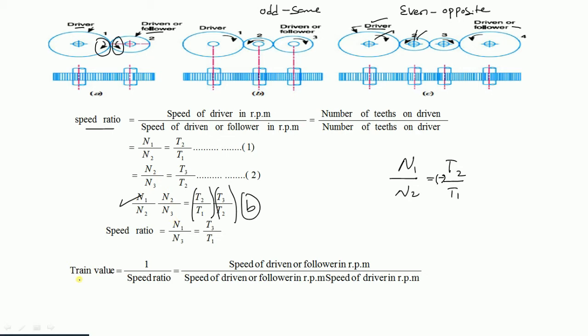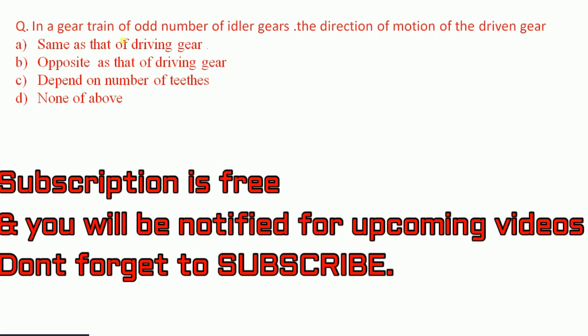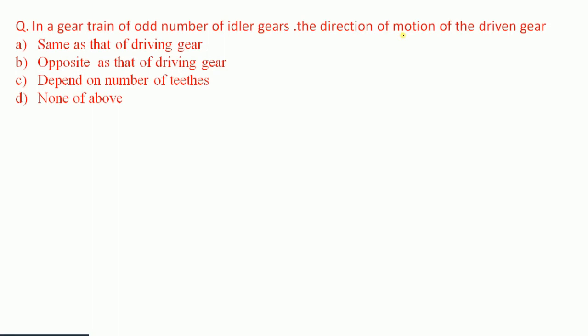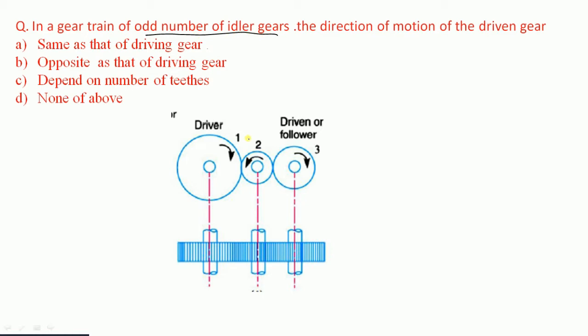The train value is 1 upon the speed ratio — the reciprocal. Question 10: In a gear train with an odd number of idler gears, the direction of motion of the driven gear is — same as the driving gear, opposite, depends on number of teeth, or none of the above? With one idler gear (odd number), the direction of rotation is the same. Therefore option A is correct.